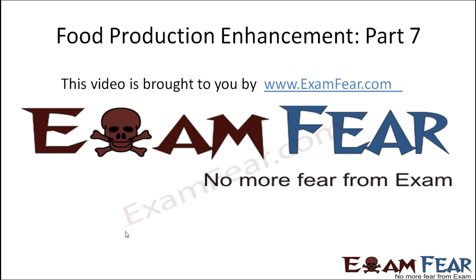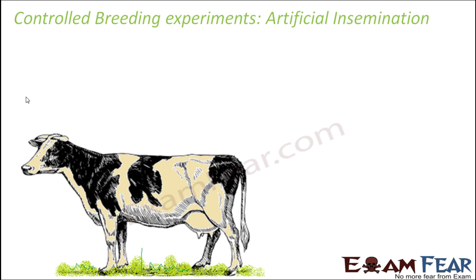This video on food production enhancement part 7 is brought to you by examfear.com. So now, whatever we have discussed so far, these were the different techniques of natural animal breeding. You saw that everywhere the animals mated with each other — whether by inbreeding, crossbreeding, or outcrossing — but everywhere the male and the female mated with each other. So they all fall under the category of natural animal breeding techniques.